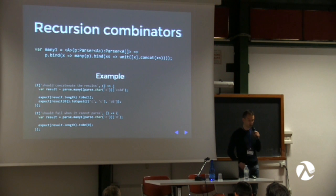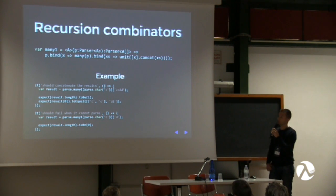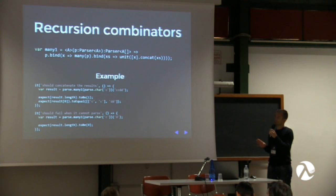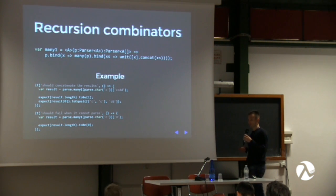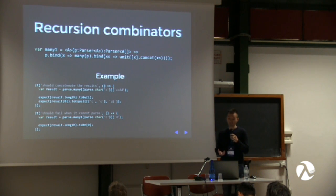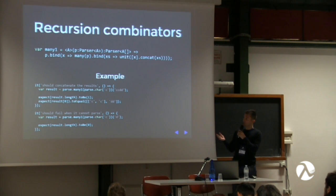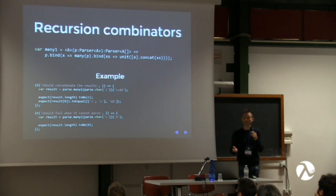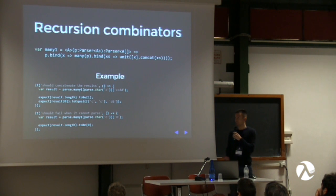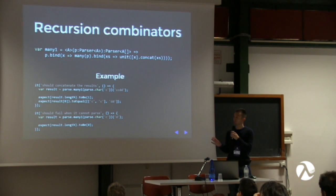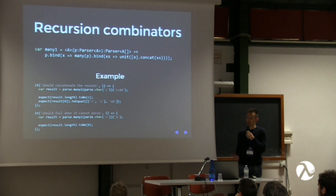We can create recursive combinators. The many1 combinator applies a parser P multiple times. For example, created with char 'c' and called with 'ccdd', it successfully parses 'c' twice and stops at 'd'. If we try to parse 'd' directly, we get no results back.